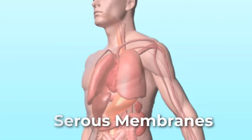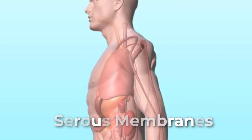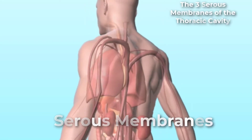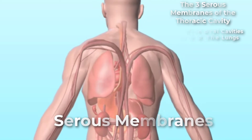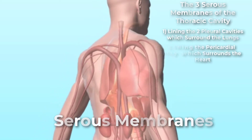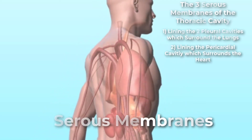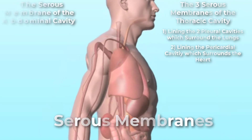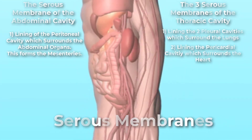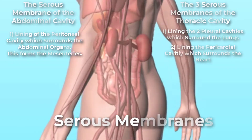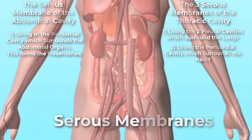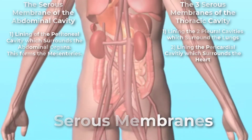Serous membranes are identified according to location. Three serous membranes line the thoracic cavity: two pleural cavities that cover the lungs, and the pericardium, which covers the heart. A fourth is the peritoneum, the serous membrane in the abdominal cavity that covers the abdominal organs and forms double sheets of mesenteries that suspend many of the digestive organs.